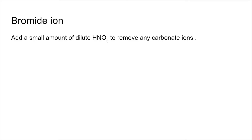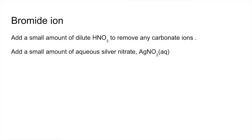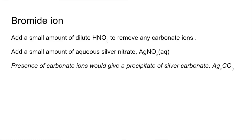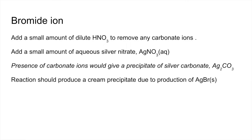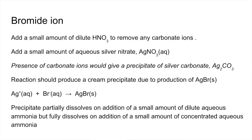Moving on to the bromide ion — very similar test, just a slightly different colour of the precipitate and a slight difference in the aqueous ammonia aspect at the end. Same again: add a small amount of dilute nitric acid to remove any carbonate ions, then add a small amount of silver nitrate solution. The carbonate ions would give a false positive silver carbonate precipitate. The bromide ions should produce a cream precipitate — not white, but cream — due to the production of silver bromide, and there's the ionic equation. For the aqueous ammonia test, the precipitate will partially dissolve with dilute aqueous ammonia, but will fully dissolve if you add concentrated aqueous ammonia.